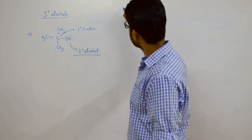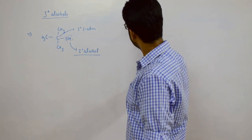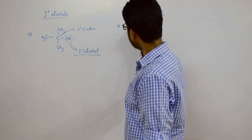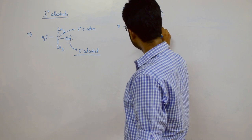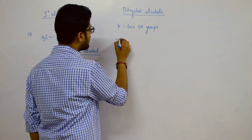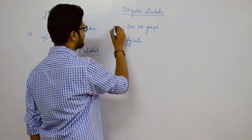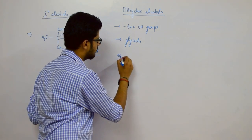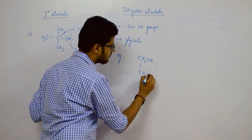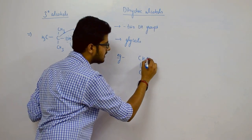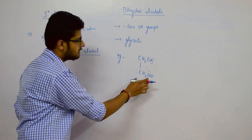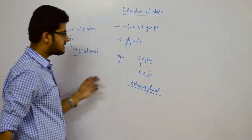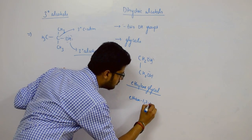Dihydric alcohols contain two OH groups in their structure and are also called glycols. For example, CH2OH-CH2OH is a dihydric alcohol because it contains two OH groups. Its common name is ethylene glycol, and its IUPAC name is ethan-1,2-diol.